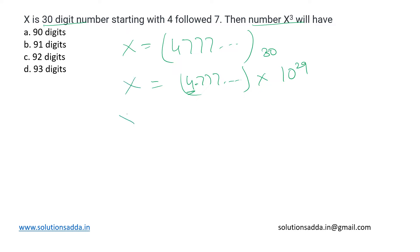Now if this is X, then what will X³ be? Taking cube on both sides, I'll get (4.777... × 10²⁹)³. I can distribute this cube to both of them.